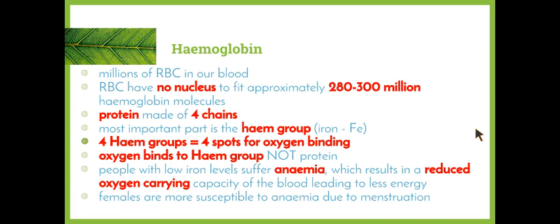People who suffer from anemia have low iron levels in their blood. A common symptom of anemia is tiredness, as there's not enough oxygen getting around the cells to carry out cellular respiration, since there's less iron and therefore less hemoglobin. People with anemia can take iron supplements to help maintain appropriate levels of iron in the blood. Females are more susceptible to anemia due to the process of menstruation.